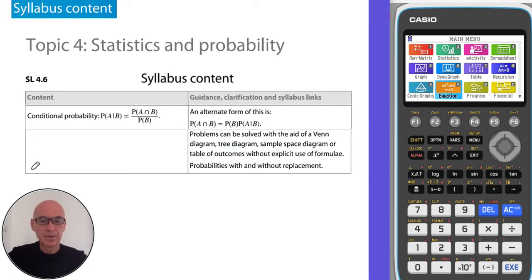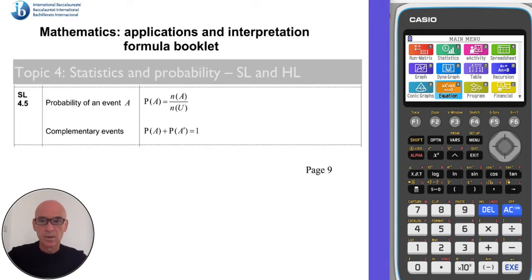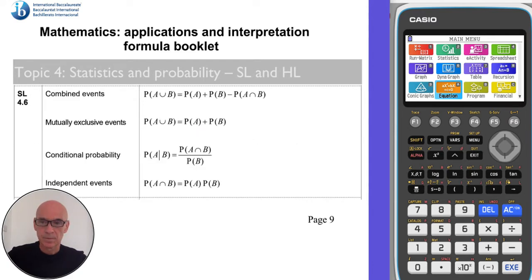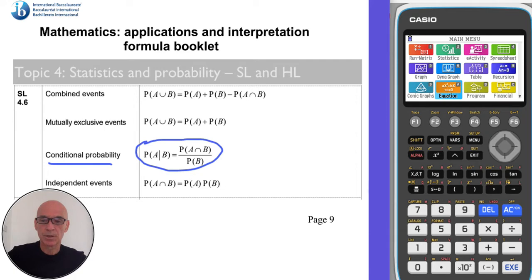If you look at some of my earlier videos, you'll see that there are questions that cover conditional probability in all of those videos. You should be familiar with these two formulas shown on page nine of your formula booklet. Today we're going to concentrate on the conditional probability formula, also shown in the formula booklet.